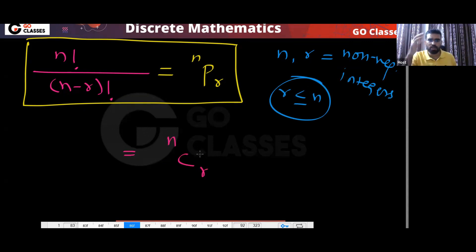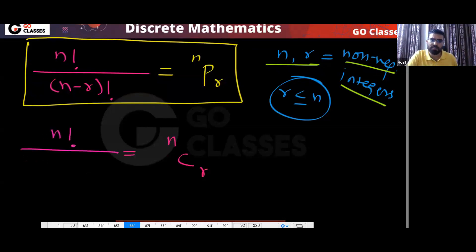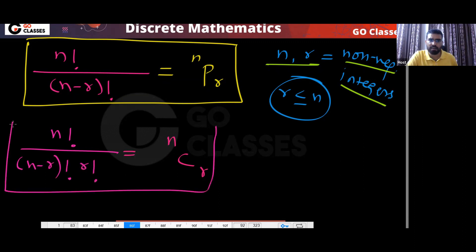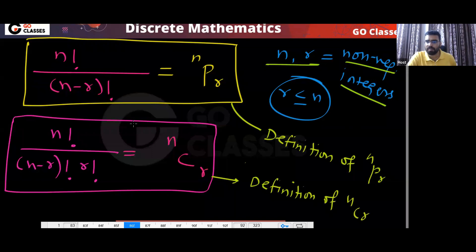So what is NCR? That is nothing but n factorial divided by (n minus r) factorial into r factorial — where n and r are non-negative integers and r is less than or equal to n. This is the definition of NCR. Remember, these are definitions, not just formulas. NPR is defined as n!/(n−r)! and NCR is defined as n!/((n−r)! × r!).